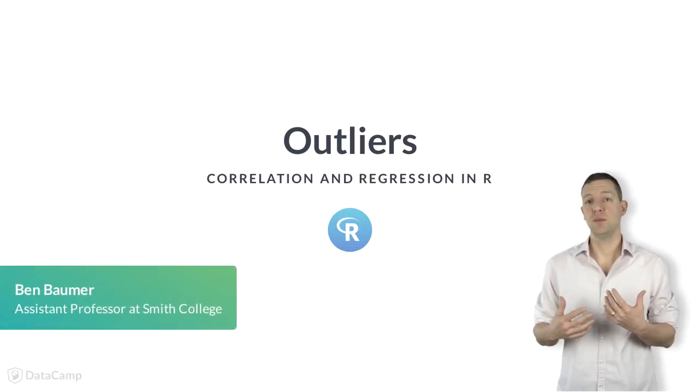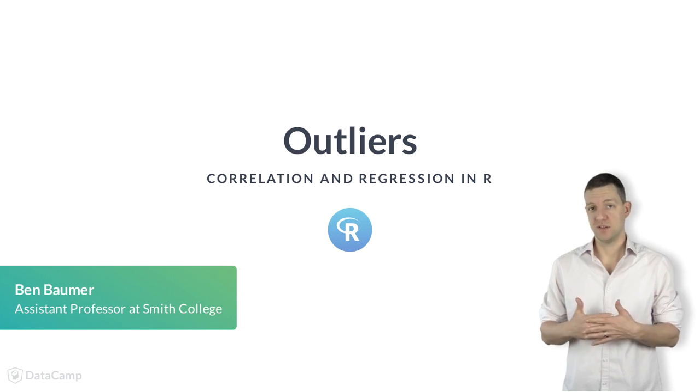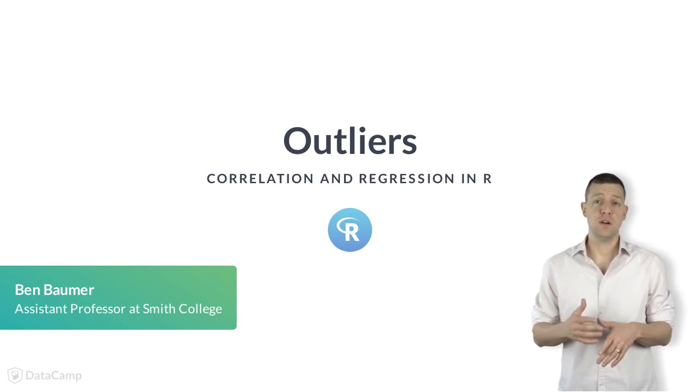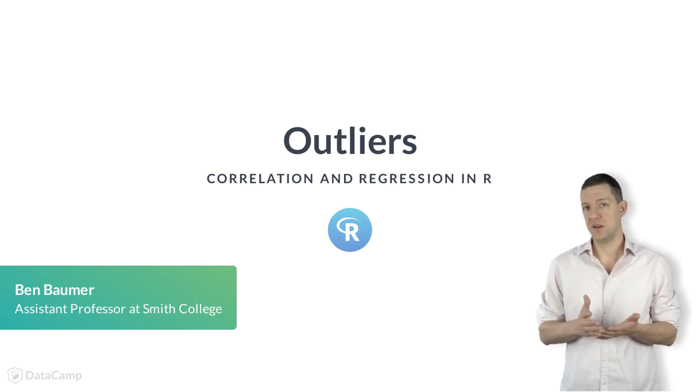Observations that don't seem to fit with the rest of the points may be considered outliers. There isn't a universal hard and fast definition of what constitutes an outlier, but they are often easy to spot in a scatterplot.